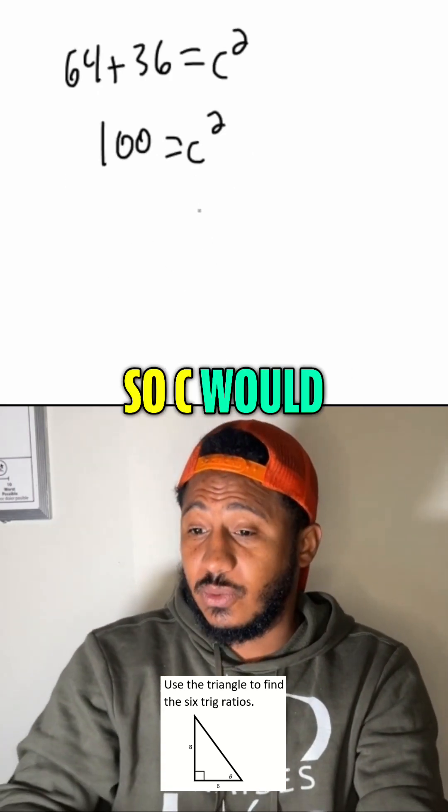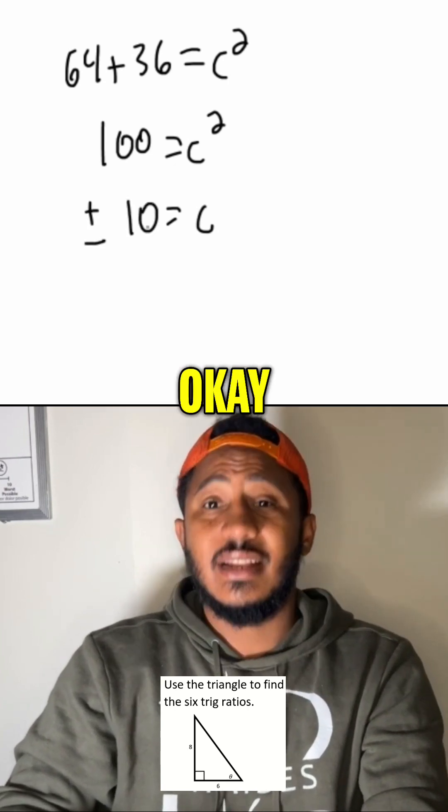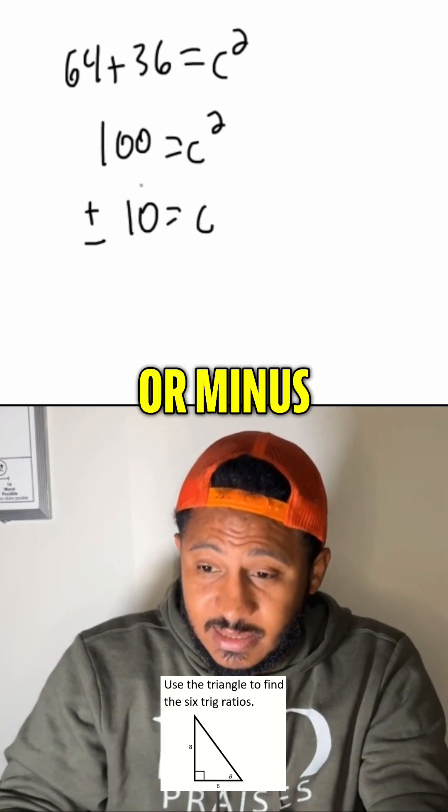Don't forget the plus or minus. So, C would equal plus or minus. The square root of 100 is 10. Now, since this isn't in any quadrants, then we don't have to worry about plus or minus. Everything is positive.